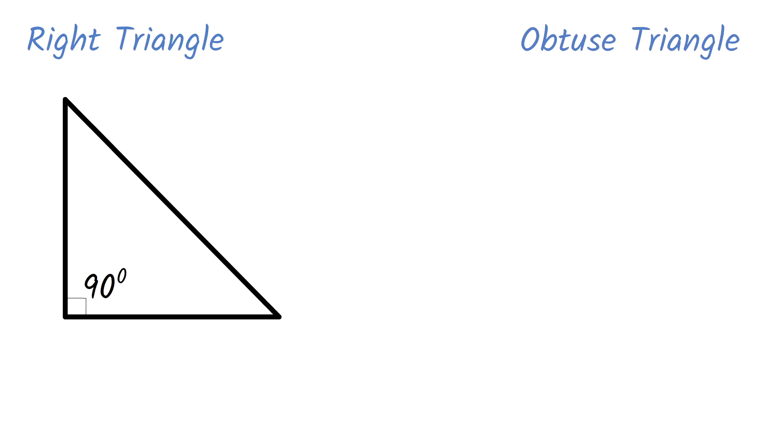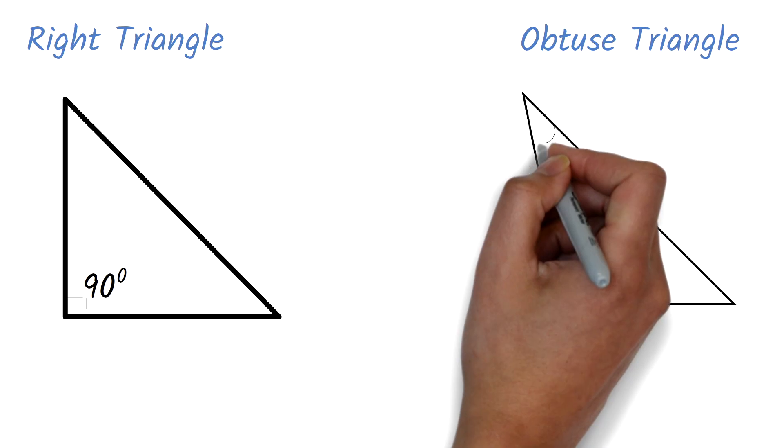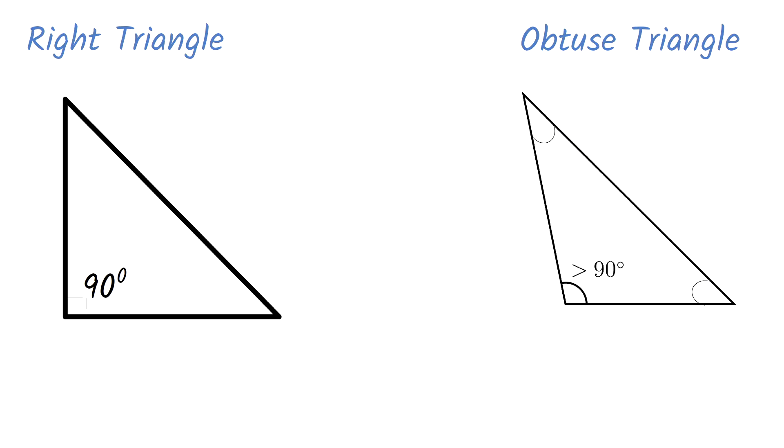3. The obtuse triangle. Here is the figure. The obtuse triangle has one of its interior angles being greater than 90 degrees. In this figure, although we have 2 angles that are less than 90 degrees, it is still an obtuse triangle because of this angle which is greater than 90 degrees. These are other examples.